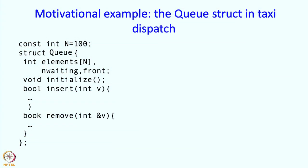This is the definition of the queue struct. If you remember, there was an array of elements storing the waiting driver's IDs, then a few variables, then an initialize member function and insert and remove member functions.